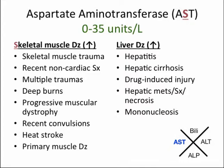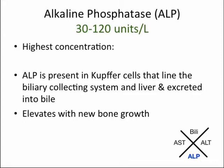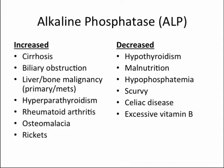Alkaline phosphatase, or ALP, is found in highest concentration in the liver, biliary tract epithelium, and bone. ALP is present in the Kupffer cells lining the biliary collecting system and is excreted into bile. ALP also tends to elevate with new bone growth. Based on this, ALP is elevated in conditions such as cirrhosis, biliary obstruction, liver and bone malignancy, osteomalacia, and rickets. A low ALP is less common but can be seen in certain conditions.